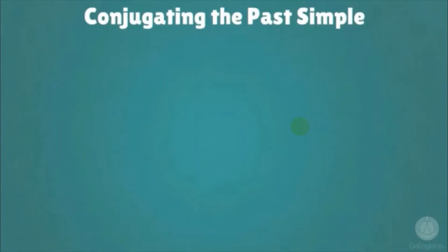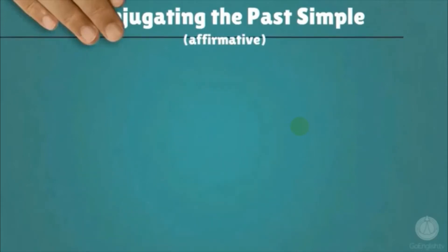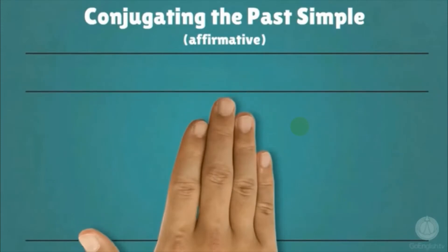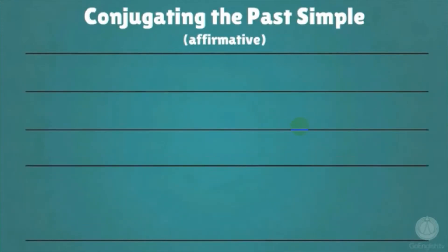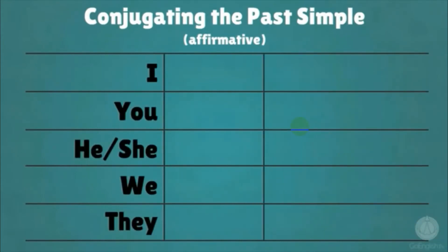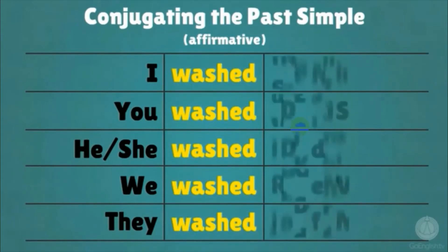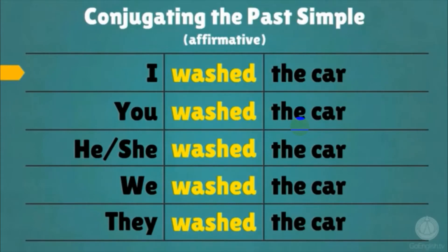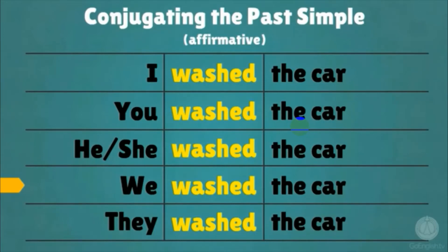Conjugating the past simple affirmative: I washed the car. You washed the car. He washed the car. She washed the car. We washed the car. They washed the car.